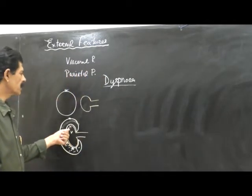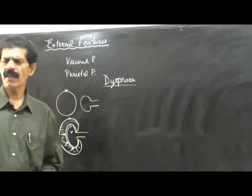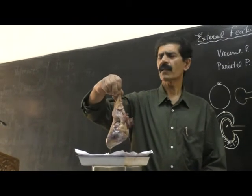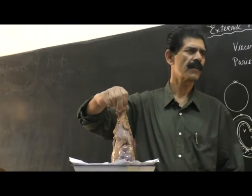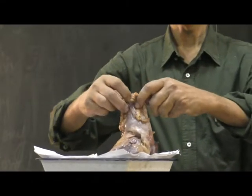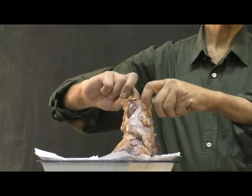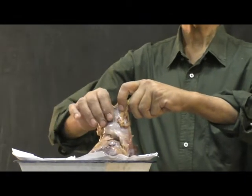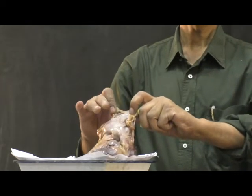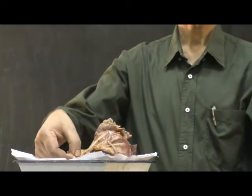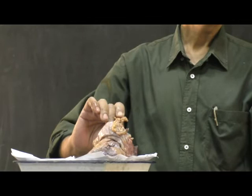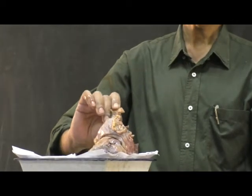After removing the pericardium — either cutting it or reflecting it upward — you are seeing the actual surface of the heart, still covered by the visceral pericardium. The layer I am holding has an outer surface of fibrous pericardium: rough, tough, lusterless, and resilient — protective. The inside is glistening — that is the parietal pericardium. This is how we differentiate between the parietal, visceral, and fibrous pericardium.